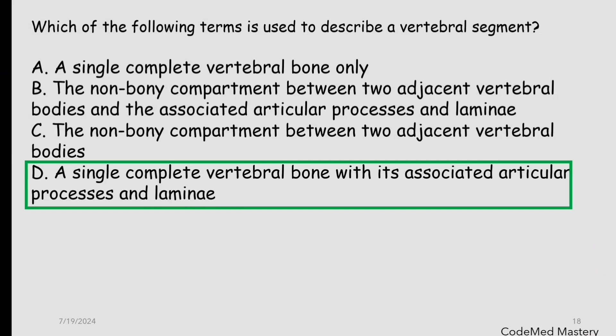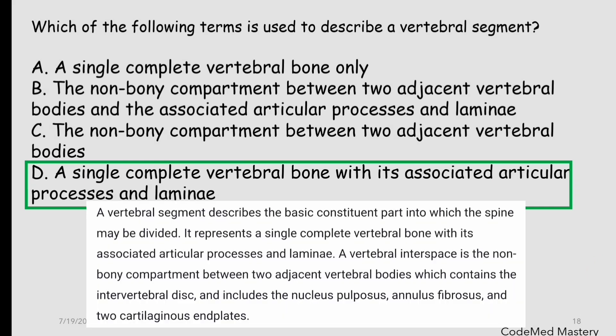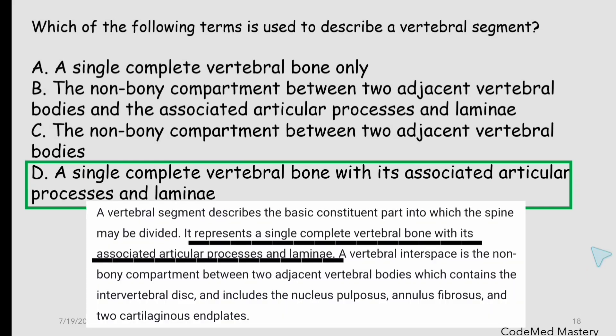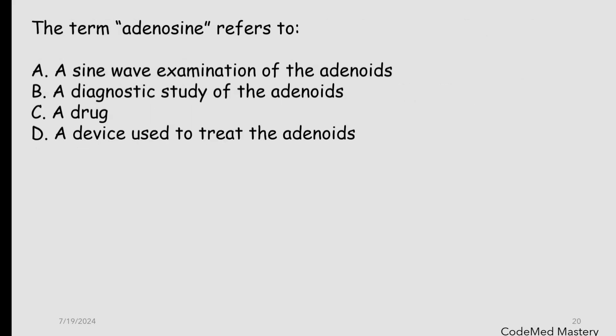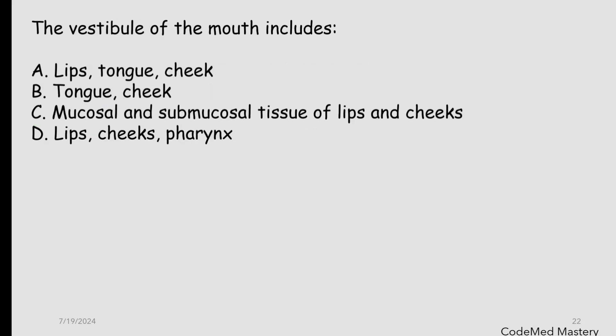A single complete vertebral bone with its associated articular processes and laminae. You will find this answer above CPT code 22590, where it is mentioned that it represents a single complete vertebral bone with its associated articular processes and laminae. Next question: the term adenosine refers to — and the right answer is option C: drug.